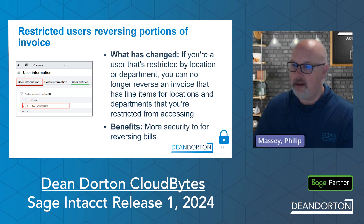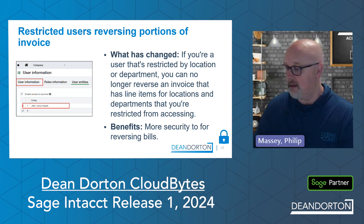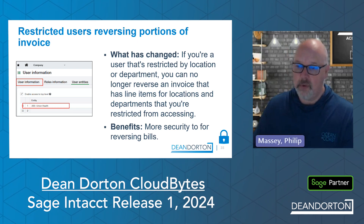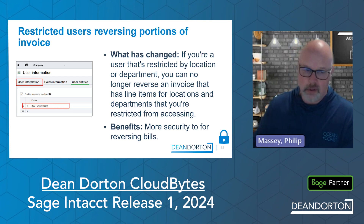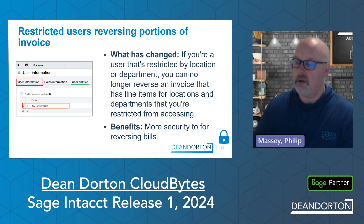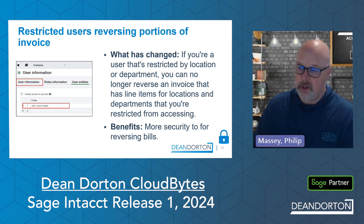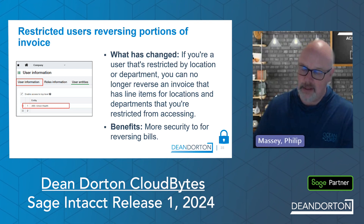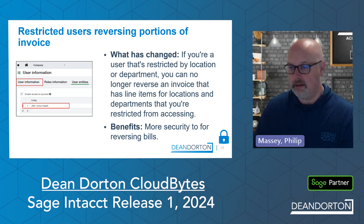Similarly for restricted users reversing portions of an invoice — just like with AP bills, if the user attempting to reverse an AR invoice does not have permissions to all departments or locations on that invoice, they will not be able to complete that reversal. They'll need to find someone with unrestricted access, or at least access to the dimensional values involved in that transaction.